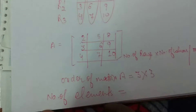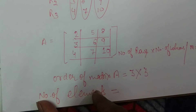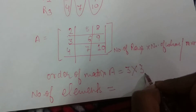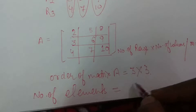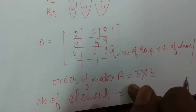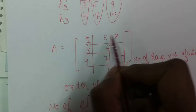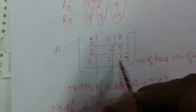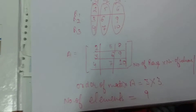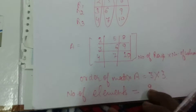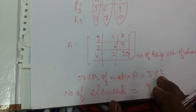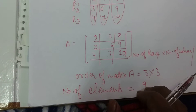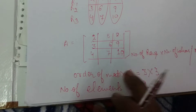If we talk about the number of elements, then we multiply the order. 3 times 3 equals 9, so 9 is our number of elements. You can count: 1, 2, 3, 4, 5, 6, 7, 8, 9 — yes, 9 elements. So number of elements equals number of rows multiplied by number of columns. For this matrix, 9 is our number of elements. Remember, we do not multiply for order.